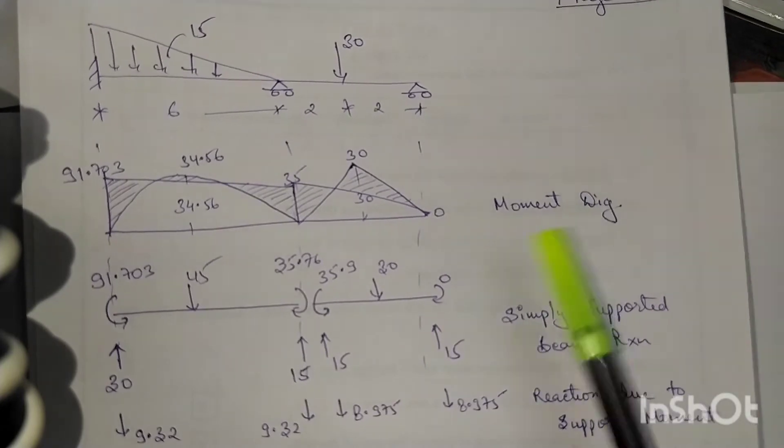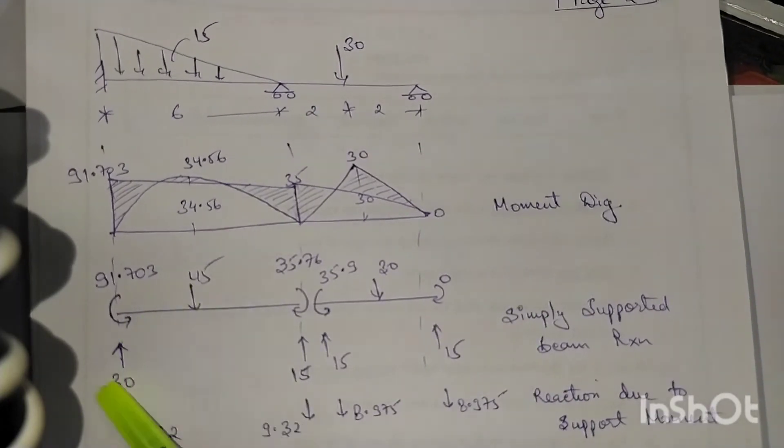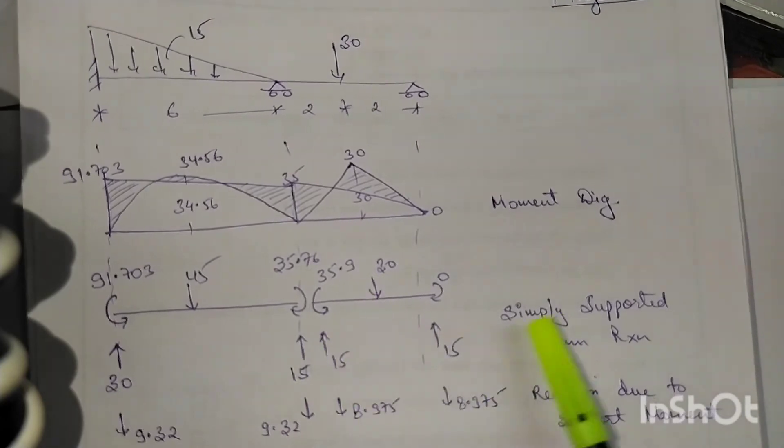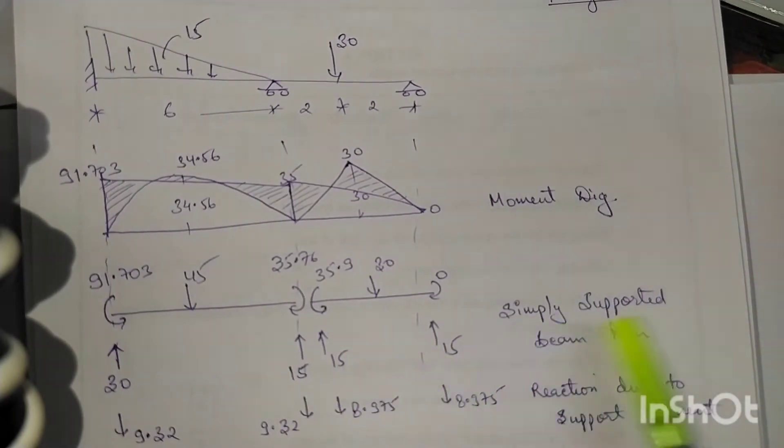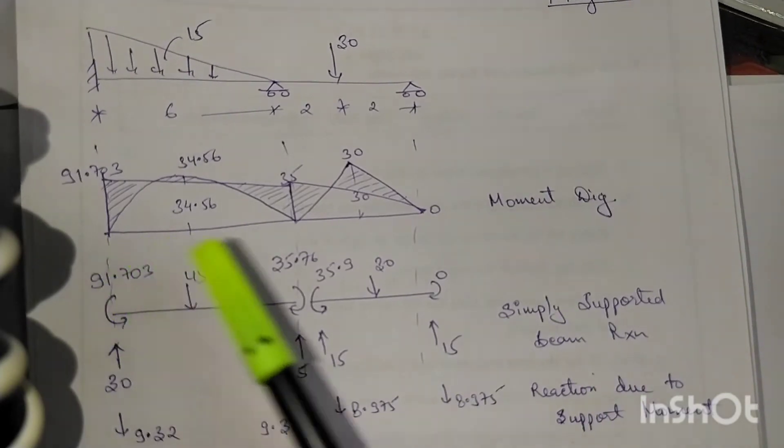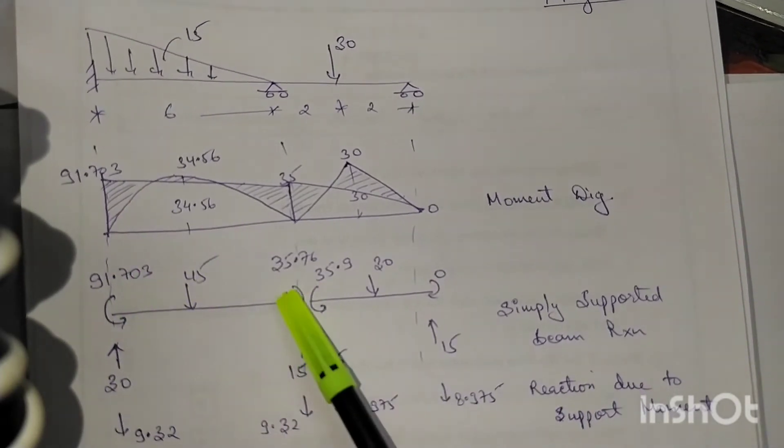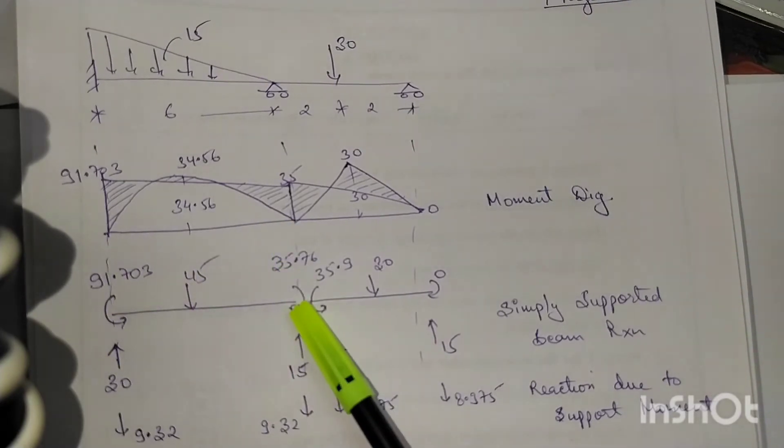Here we have all the moments: clockwise, anti-clockwise. The shear forces - what we have done is anti-clockwise and clockwise, both are different in nature. So clockwise minus anti-clockwise divided by the total length, we got the shear force, and accordingly we have traced all the shear forces.